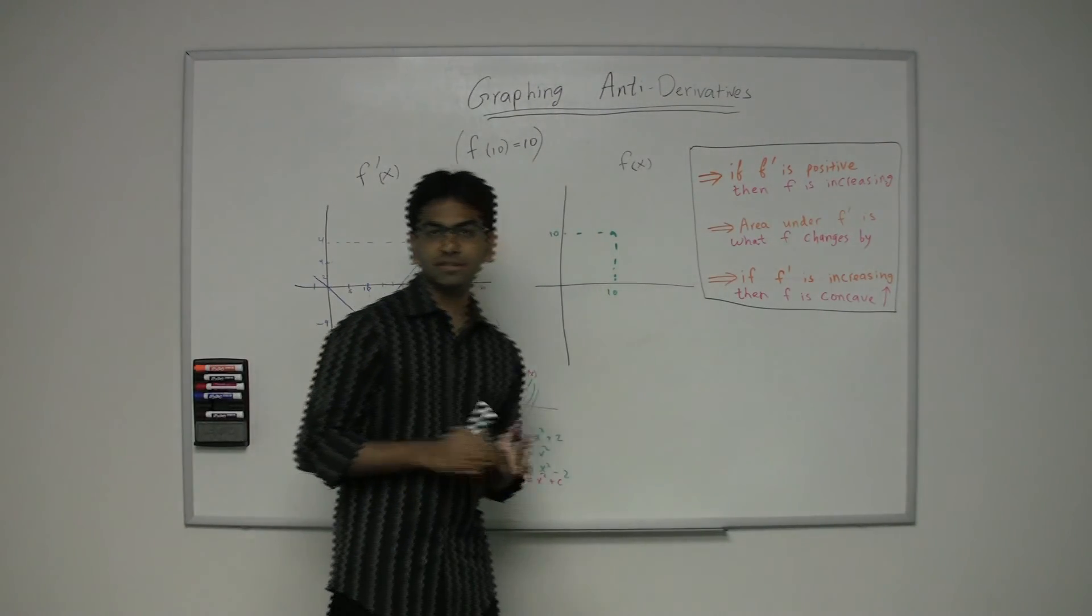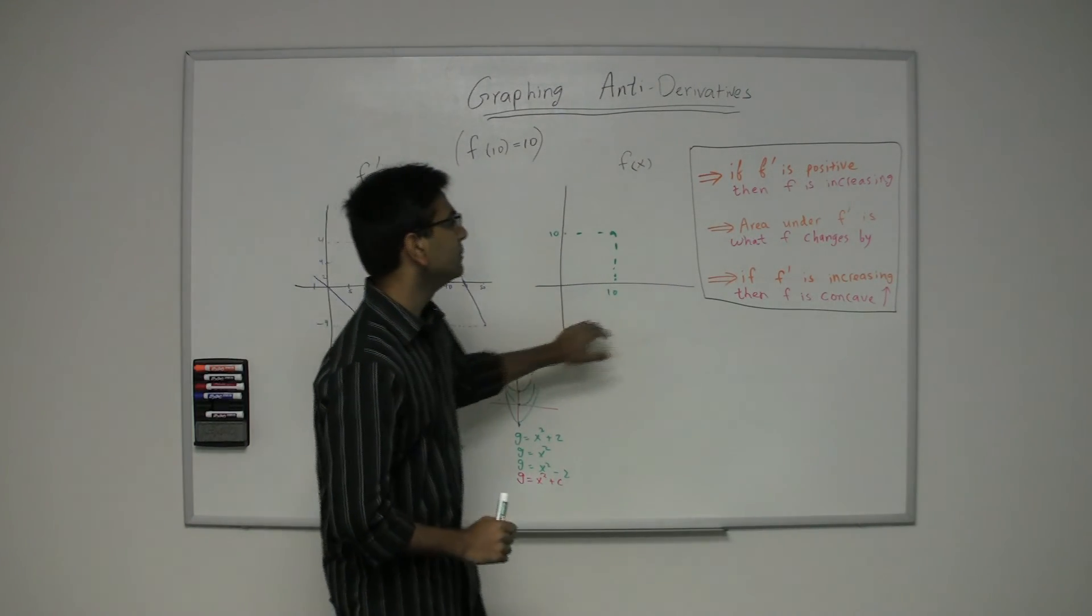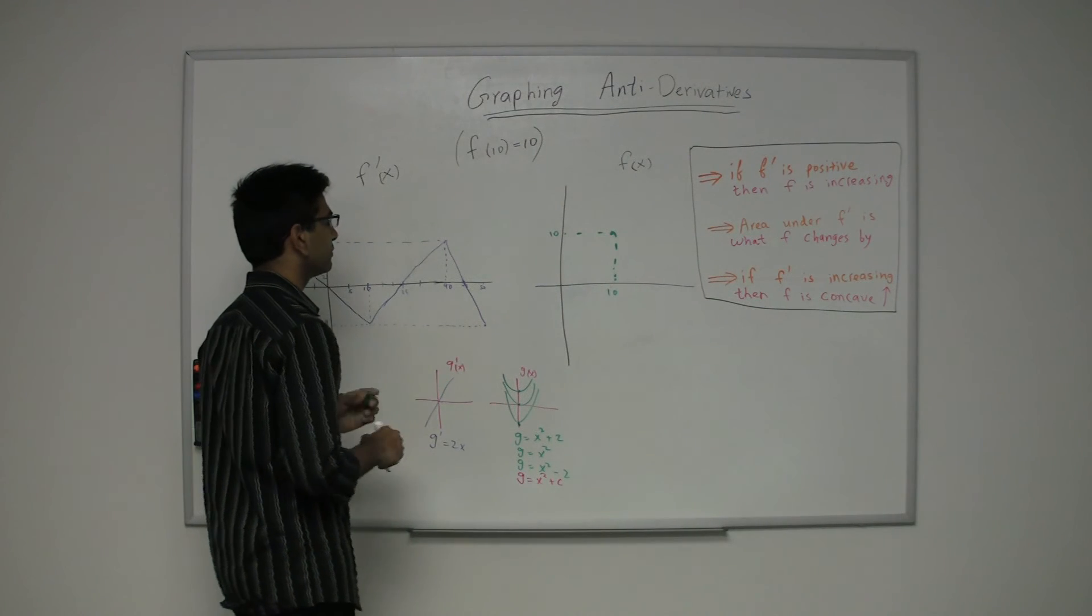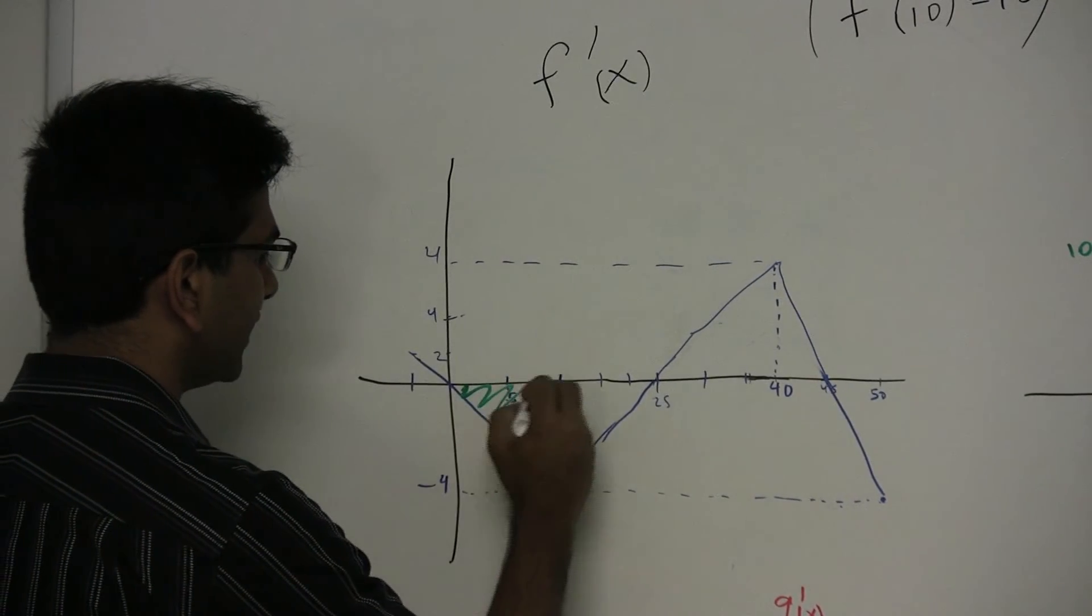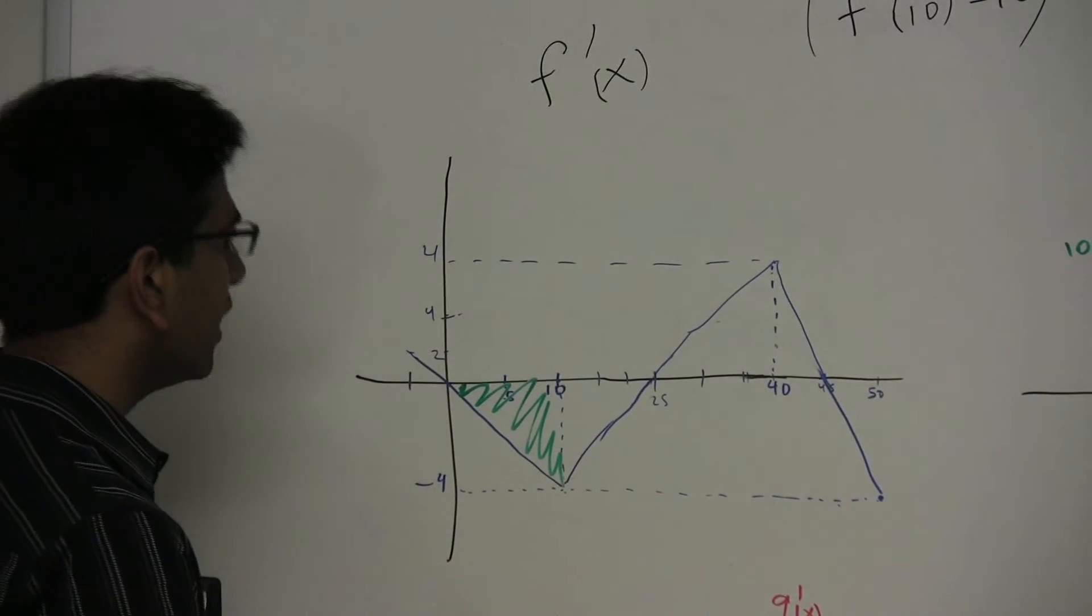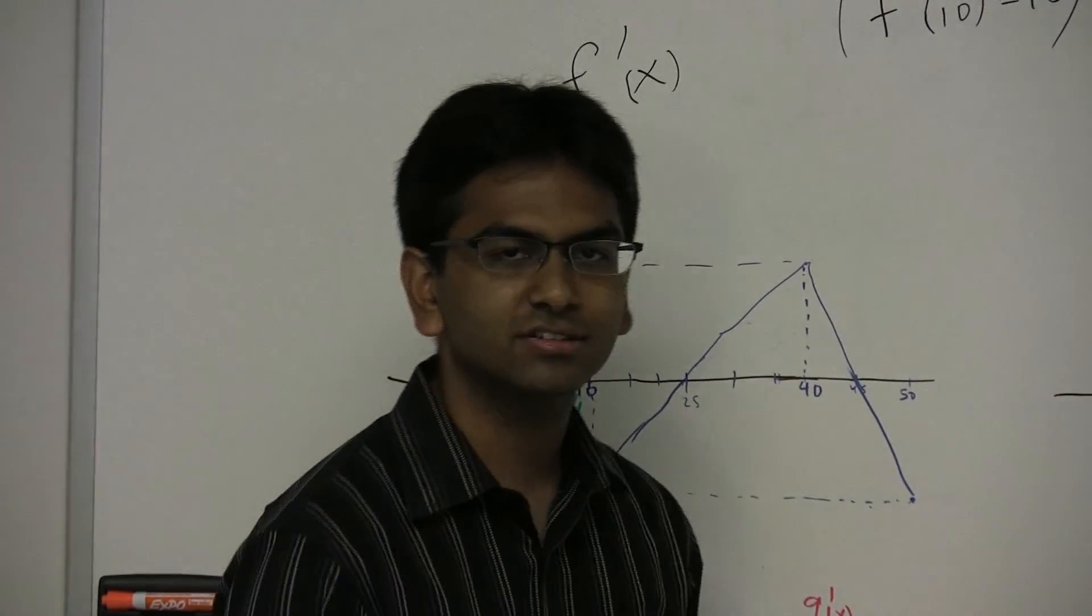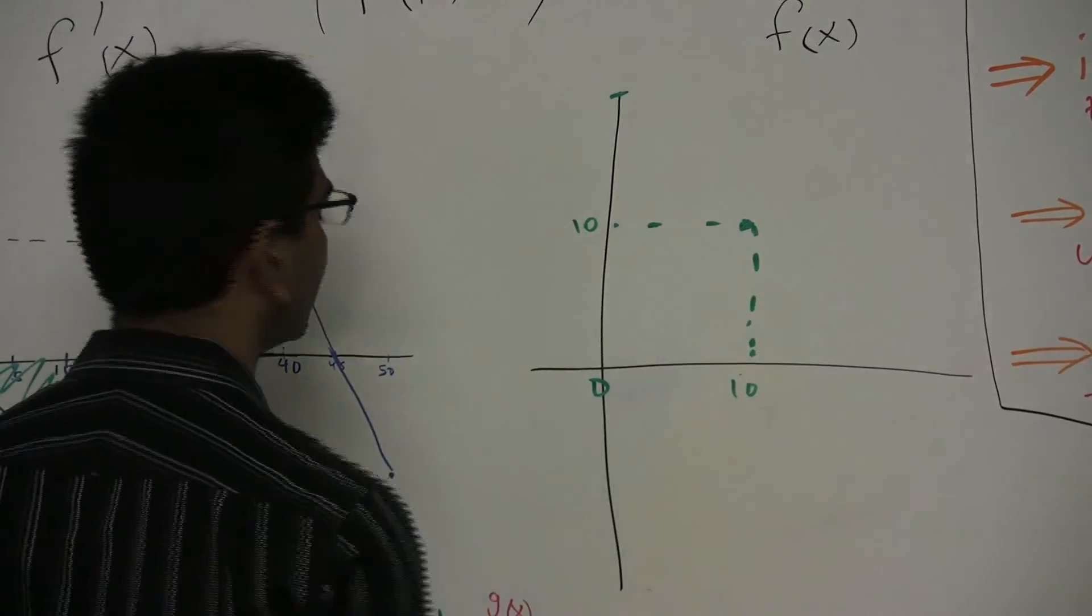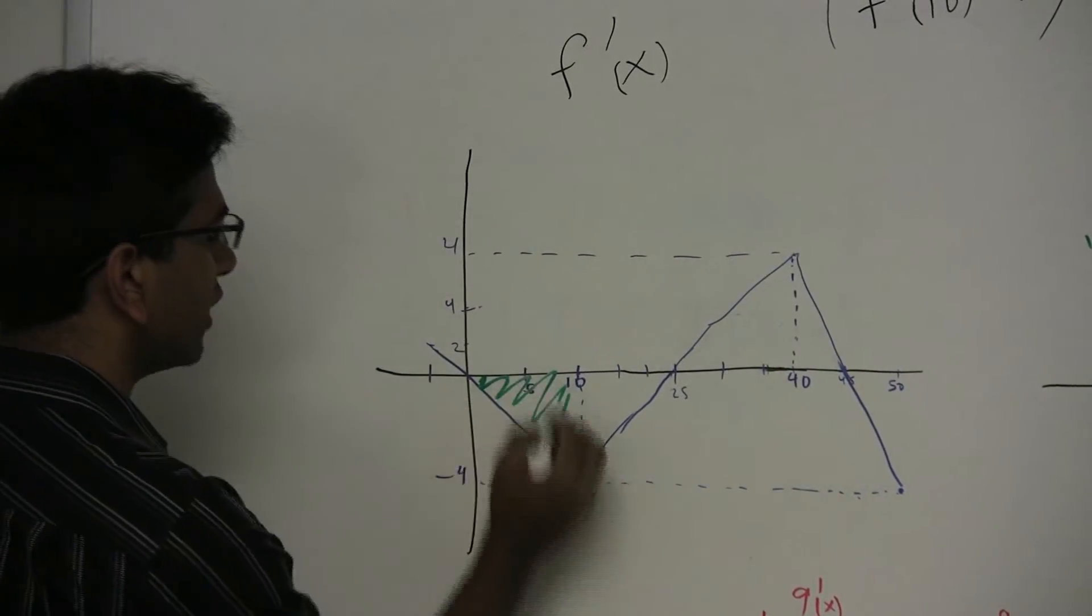Now here is where this gets a little tricky. We can actually be very precise when we're drawing the graph, because the area under this graph f prime is actually what f changes by. So let's take a look at how this will work out. First of all, f of 10 equals 10. Let's look at this area over here. We know that f prime is negative between 0 and 10, so we know that this is going to decrease. So here, it's probably at 0, probably some high number up there, and it's going to decrease down to 10. But how much will it actually decrease by?